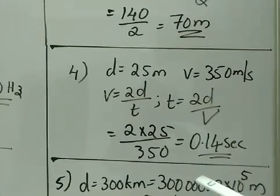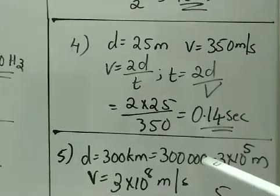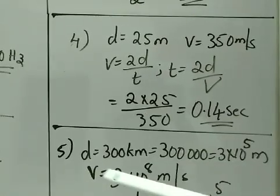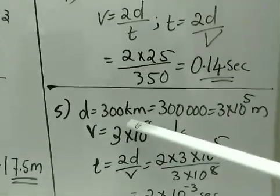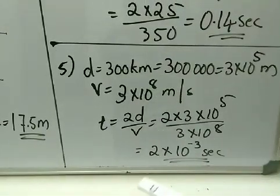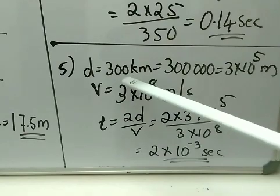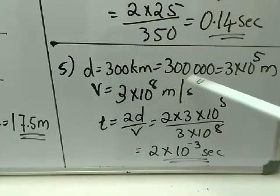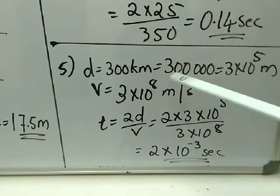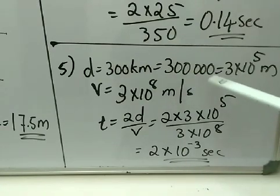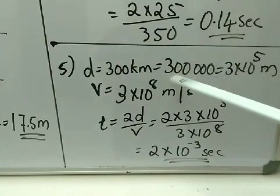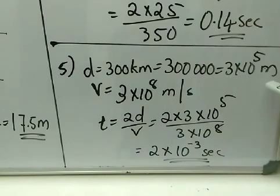Question number 5: a radar sends a signal to an aeroplane at a distance 300 km. Kilometer is not the SI unit, so we convert: 300 km × 1000 = 3 × 10⁵ m. Velocity is given as 3 × 10⁸ m/s. Our question is to calculate the time.